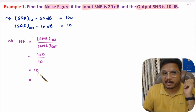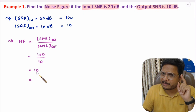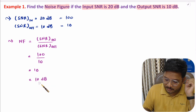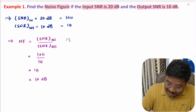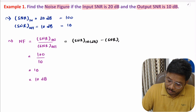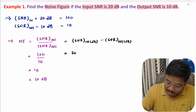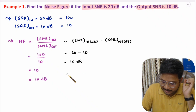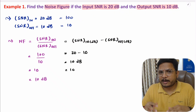Second method — work directly in dB. Noise figure (dB) = SNR_input(dB) − SNR_output(dB) = 20 dB − 10 dB = 10 dB. And 10 dB in terms of value is 10. So both methods give the same answer. That is how one can calculate noise figure with respect to dB as well as with respect to normal values.